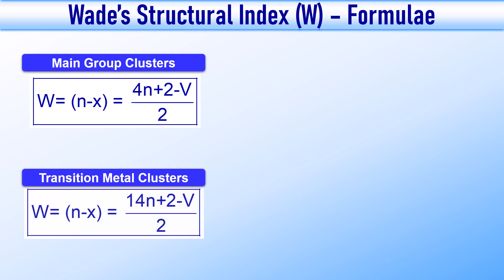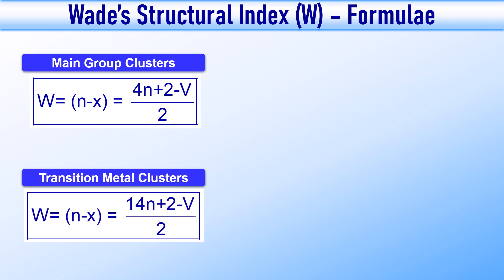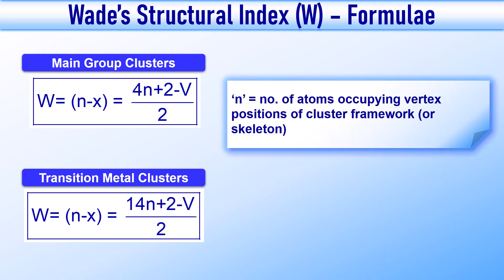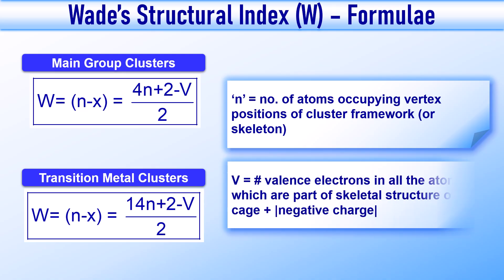The key to finding the type and shape of an inorganic cluster compound is to determine the Wade's structural index N-X. This can be done using shortcut formulae as shown on the screen. The first formula is for inorganic clusters of main group elements: W = (4N + 2 − V) / 2. The second formula is for transition metal clusters: W = (14N + 2 − V) / 2. Here N is the number of vertices in the actual cluster and V is the total valence electrons of all atoms in the skeletal structure. If the cluster has a negative charge, we add it to V; if there is a positive charge, we subtract it from V.